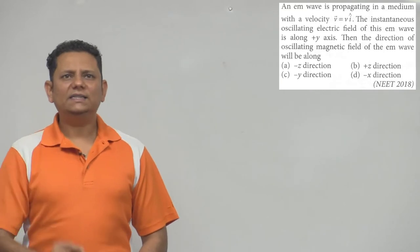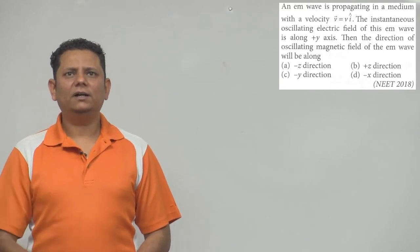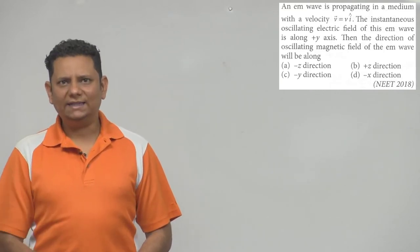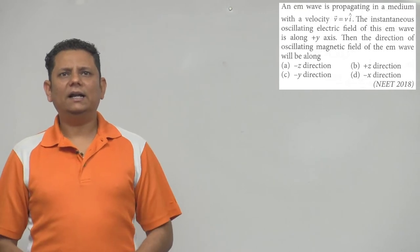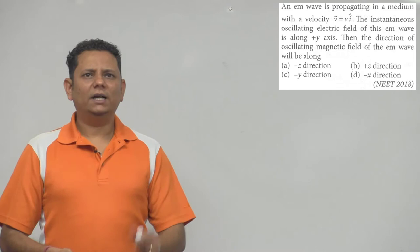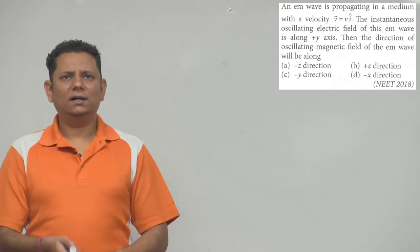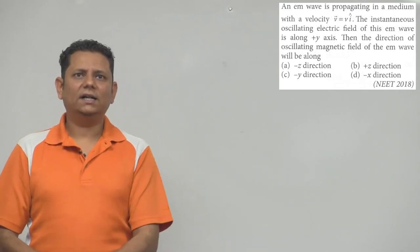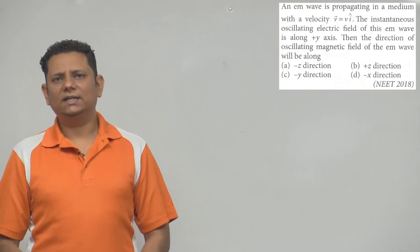Next question. Question says an EM wave is propagating in a medium with velocity V is equal to V i cap. The instantaneous oscillating electric field in this EM wave is along Y axis. Then the direction of oscillating magnetic field of the EM wave will be along. Options are plus Z direction, minus Z direction, minus Y direction, or minus X direction.